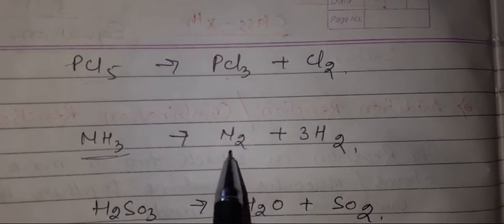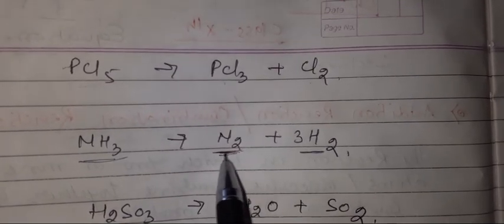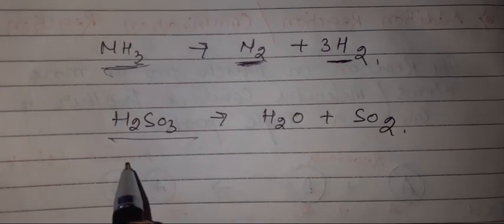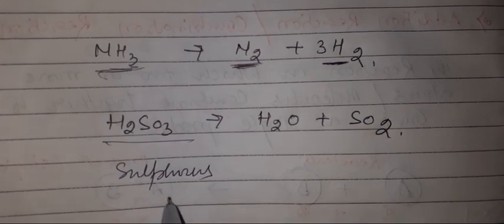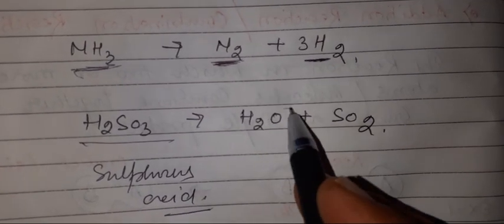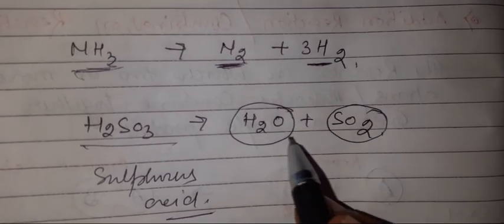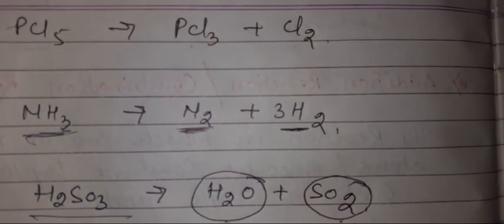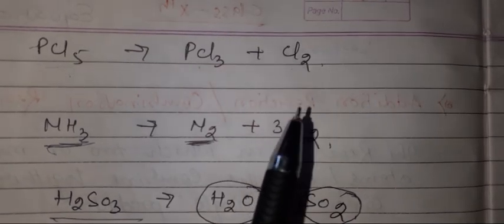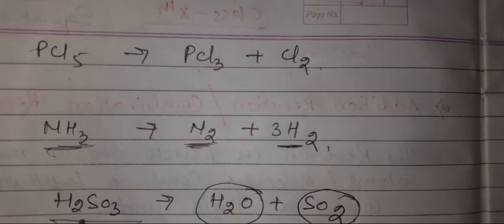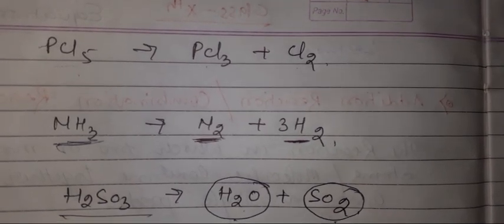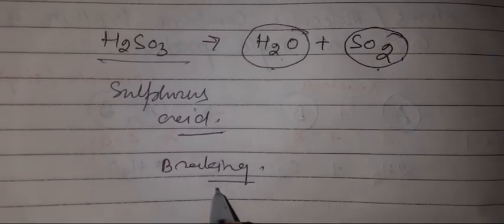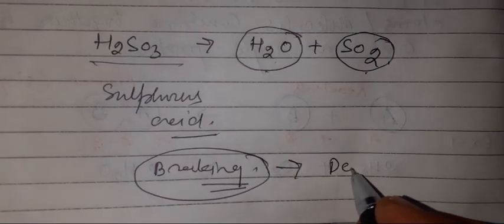NH3 dissociates into N2 and H2, that is nitrogen gas and hydrogen gas. This is ammonia gas. Now H2SO3, sulfurous acid, dissociates into water and SO2, water and sulfur dioxide. So all these reactions, PCl5 gives PCl3 and Cl2, and NH3 gives N2 plus 3H2, and H2SO3 gives H2O and SO2, are examples of breaking. So these all are decomposition.